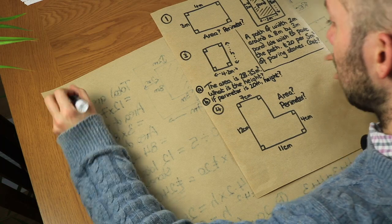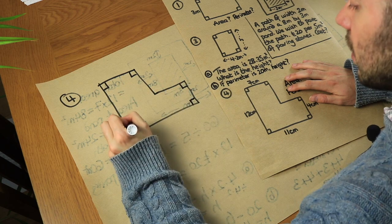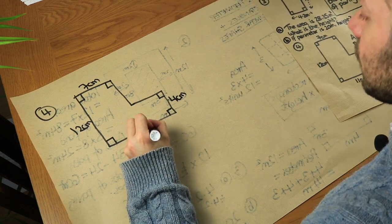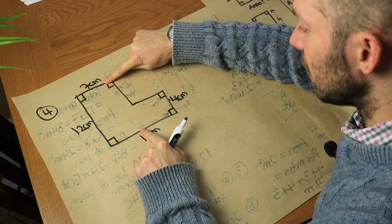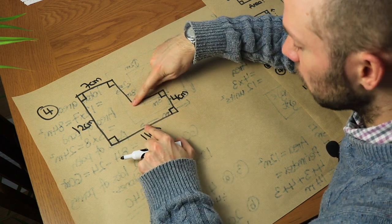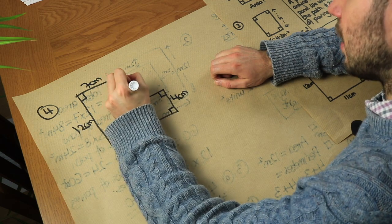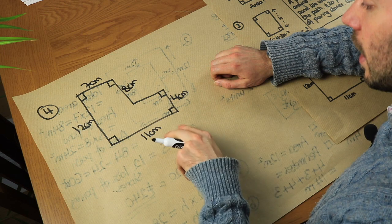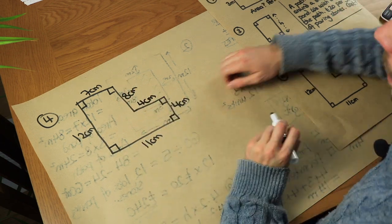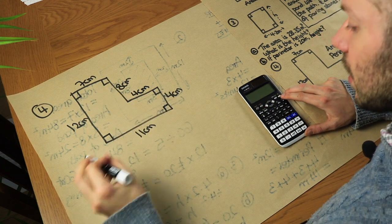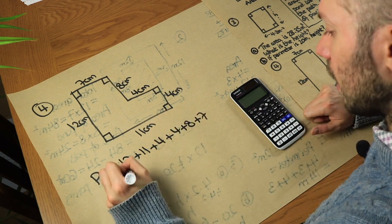For the last example, we've got a rectilinear shape where all the angles are 90 degrees — or in one case 270 degrees. We need to find the perimeter first, so we find the missing lengths. The total height is 12 centimeters and one part is 4 centimeters, so the other part must be 12 minus 4 which is 8 centimeters. The total horizontal length is 11, and 7 plus 4 is 11. Adding all edges: 12 plus 11 plus 4 plus 4 plus 8 plus 7 gives 46 centimeters.